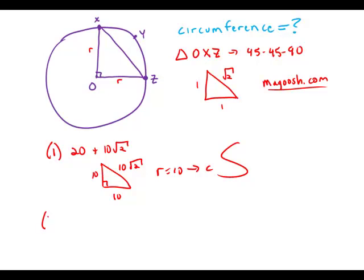Now forget about that statement. Statement number two tells us the length of the arc, the arc XYZ. That arc has a length of 5π. Well, that arc is a quarter of the circle, so all the way around the circle would have to be 20π. 20π would be the circumference. So that statement is also sufficient.